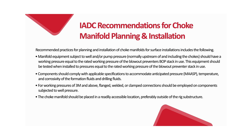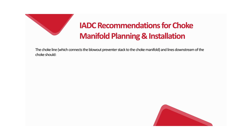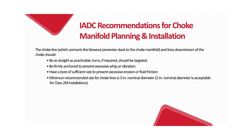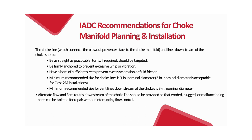The choke manifold should be placed in a readily accessible location, preferably outside of the rig substructure. The choke line — which connects the BOP stack to the choke manifold — and lines downstream of the choke should be as straight as practicable; turns, if required, should be targeted. Lines should be firmly anchored to prevent excessive whip or vibration, and have a bore of sufficient size to prevent excessive erosion or fluid friction. Minimum recommended size for choke lines is 3 inches nominal diameter; 2 inches nominal diameter is acceptable for class 2M installations. Minimum recommended size for vent lines downstream of the chokes is 3 inches nominal diameter.